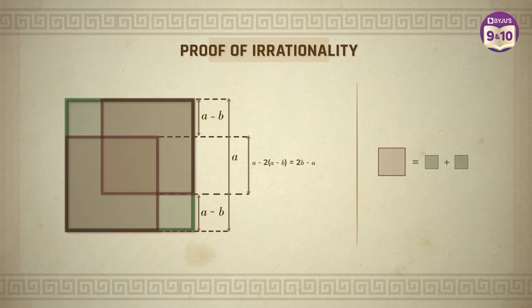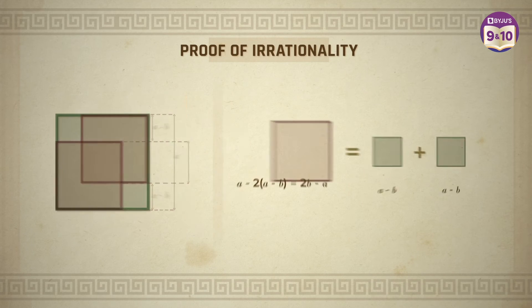As per our assumption, ideally the area of the section that is overlapping must be equal to the area of the other two equal sections. Let's bring them out.